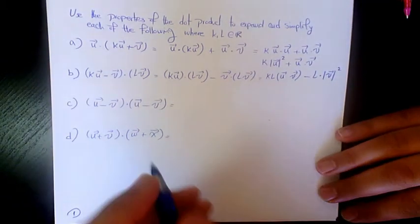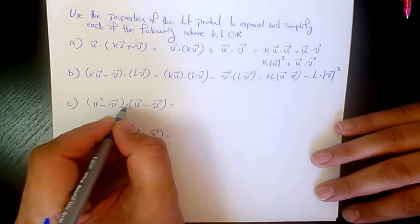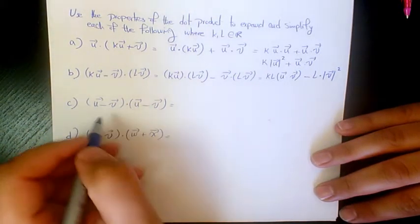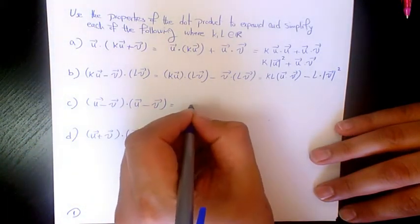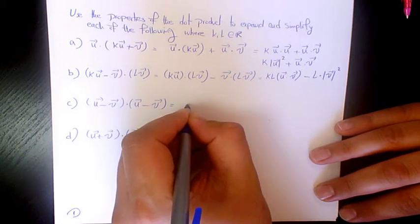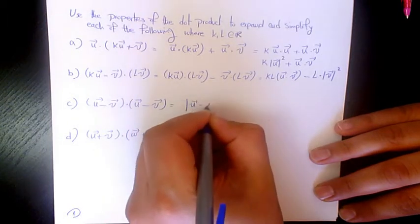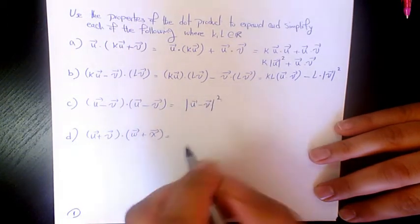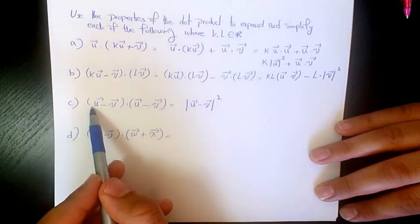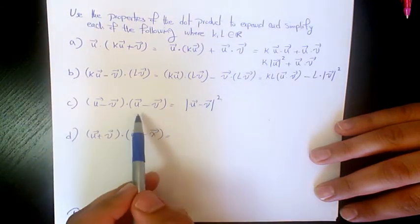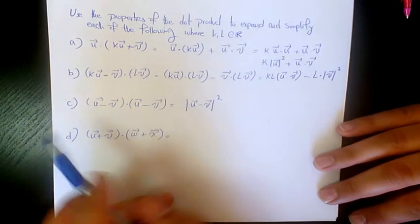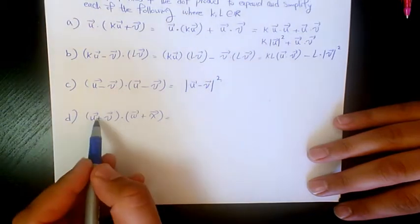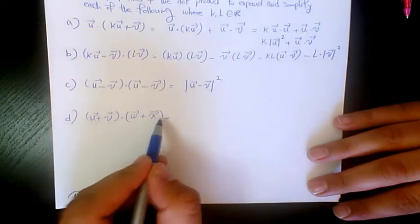Next, (u minus v) dot (u minus v) — both are the same vector, so it's going to be the magnitude of (u minus v) to the power of 2. The angle between them is 0 since they are the same thing.